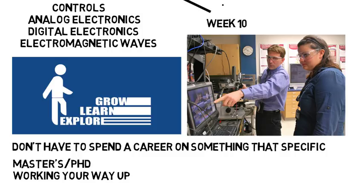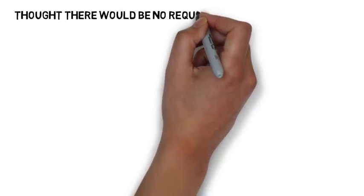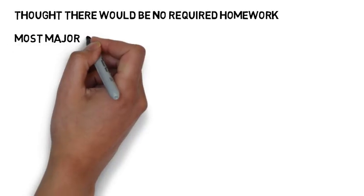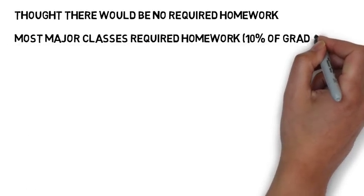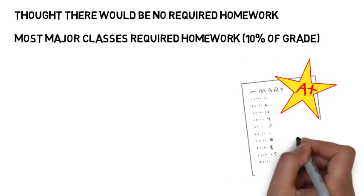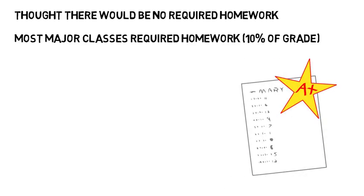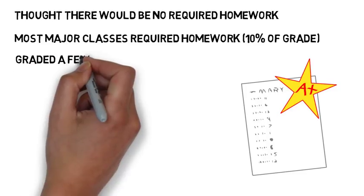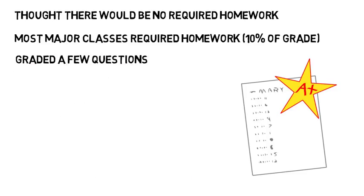Now, moving on, these next topics will be less specific to engineering, but are some things I encountered in college. So one is going into university, I thought there would be no required homework. I don't know why, but I thought professors only care about exams and finals. But actually, most of my major classes required homework and it usually accounted for about 10% of our grade. Nothing big, but it was there. Also in some classes, that homework was graded for right answers just like a test. In some classes, they kind of just looked for completion and there were some in between where maybe they graded a few questions randomly and the rest were for completion.